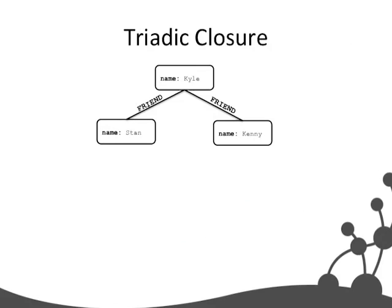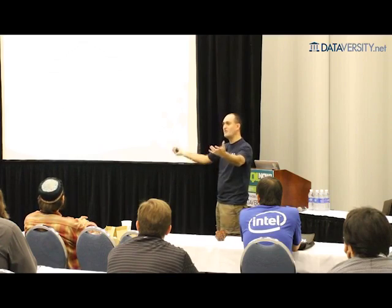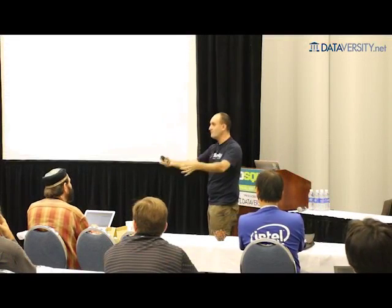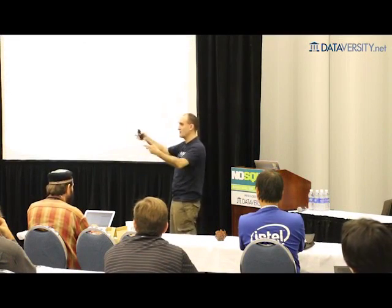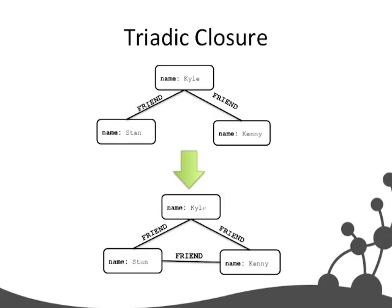Here we have a potential little social network from the South Park cartoon — Kyle, who's a friend of Stan, and Kyle, who's a friend of Kenny. As humans there seems to be a tension there: if you've got two friends, at some point you're going to introduce them. Because you like both those friends, chances are they're going to like each other as well — you get to close the triangle. Kyle's a friend of Stan, Kyle's a friend of Kenny, Stan and Kenny become friends. But there's also this notion of structural balance in triadic closure.